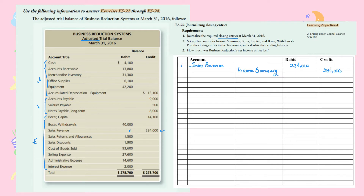Now for the second closing entry. Since this is a merchandising company, I need to close expenses, cost of goods sold, and contra-revenue accounts. The contra-revenue accounts are Sales Returns and Allowances and Sales Discount. We also have selling expenses, admin expenses, interest expenses, and cost of goods sold — six accounts, all on the debit side. To close them, I need to credit all of them.